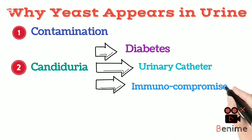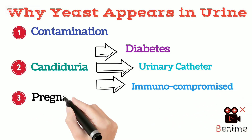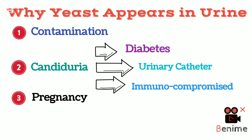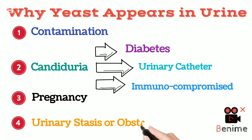The third one is pregnancy, which also plays a major role in the appearance of yeast in urine. Lastly, urine stasis or obstruction, which also contributes to causing Candiduria or the appearance of yeast in urine.